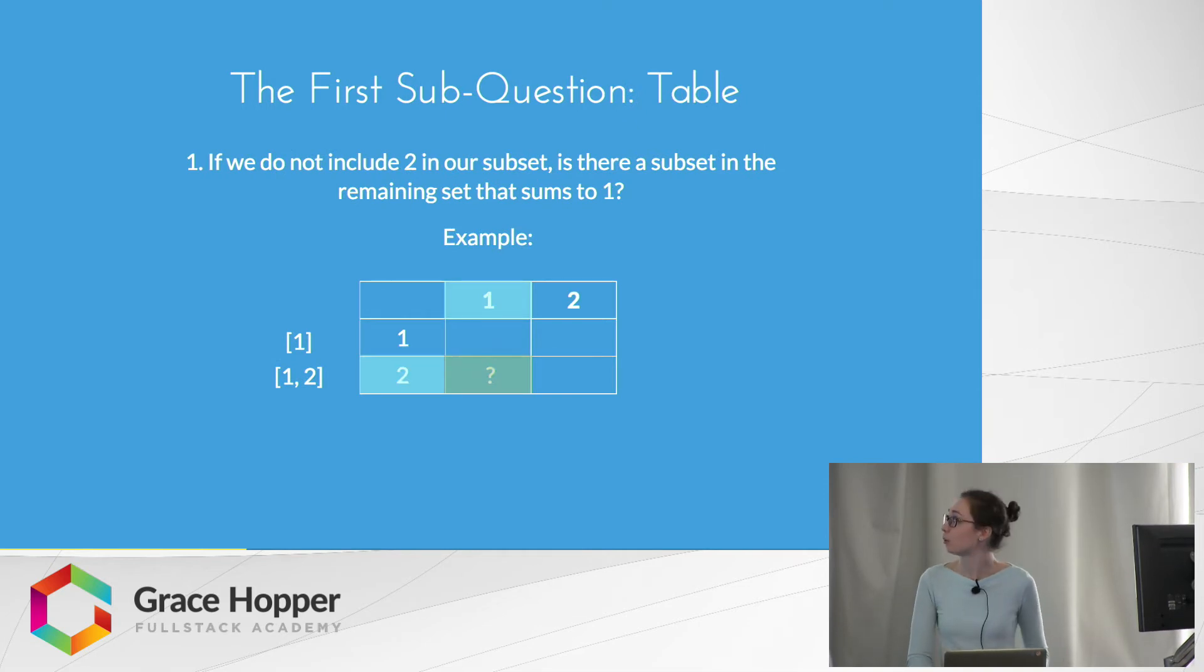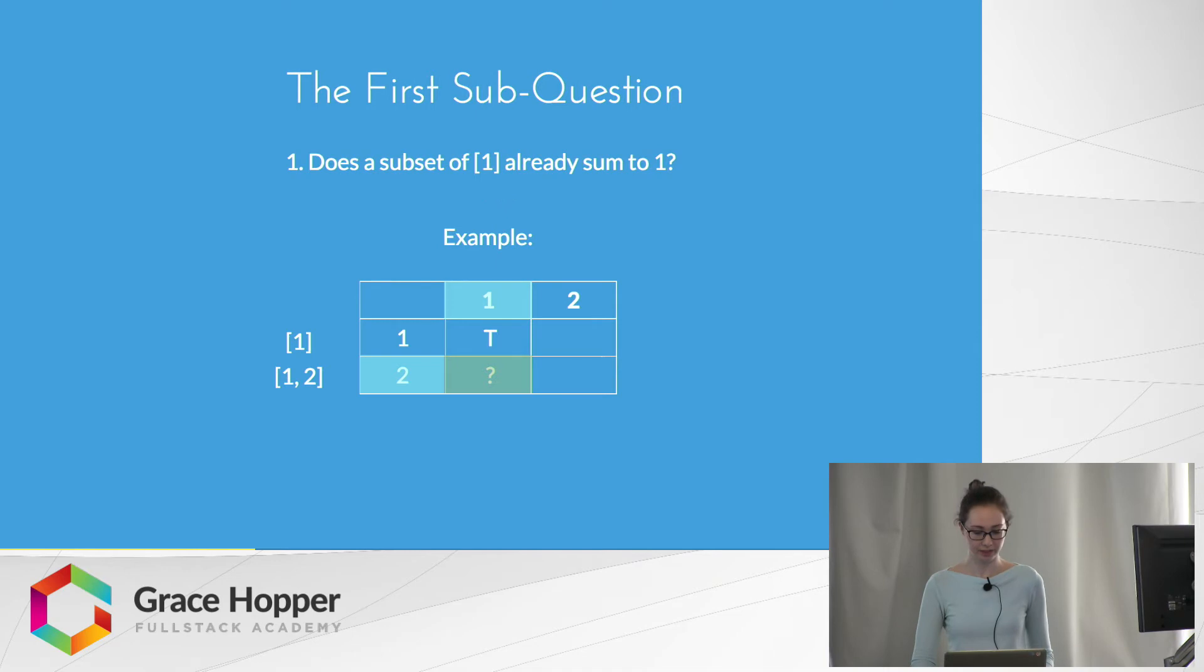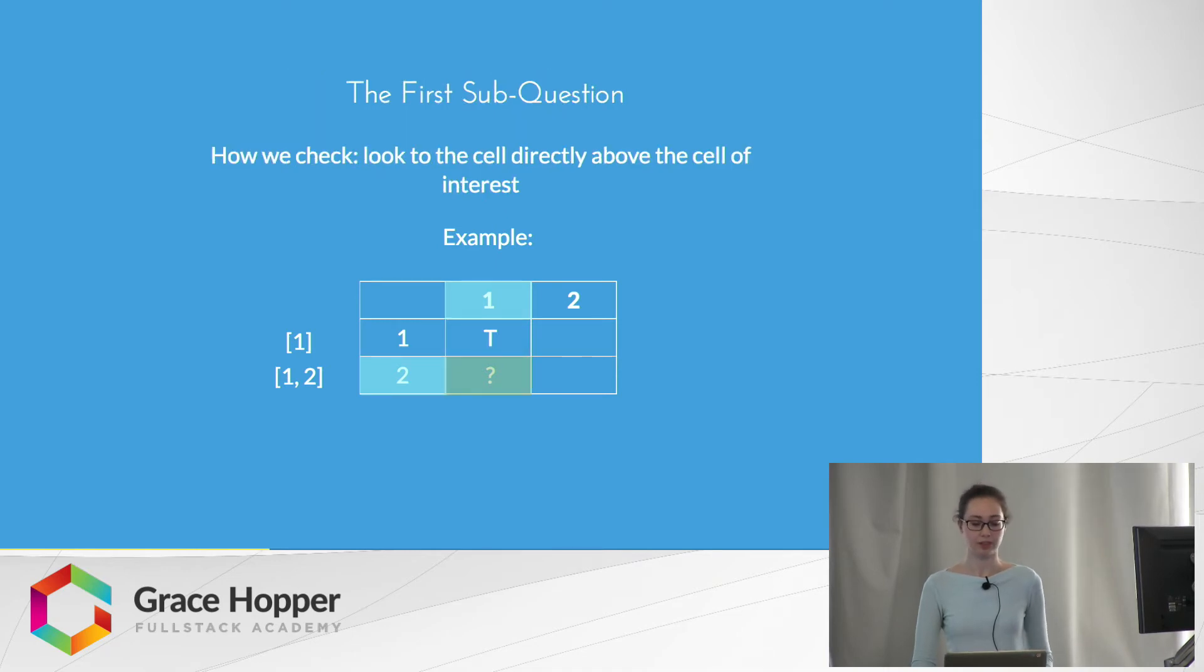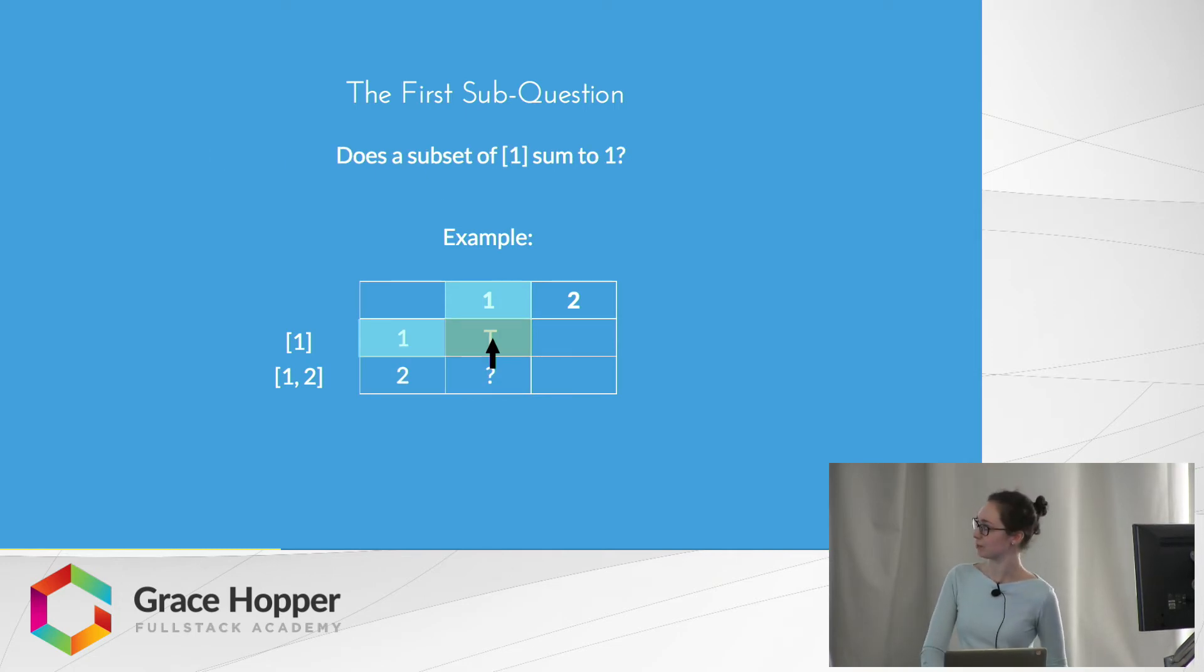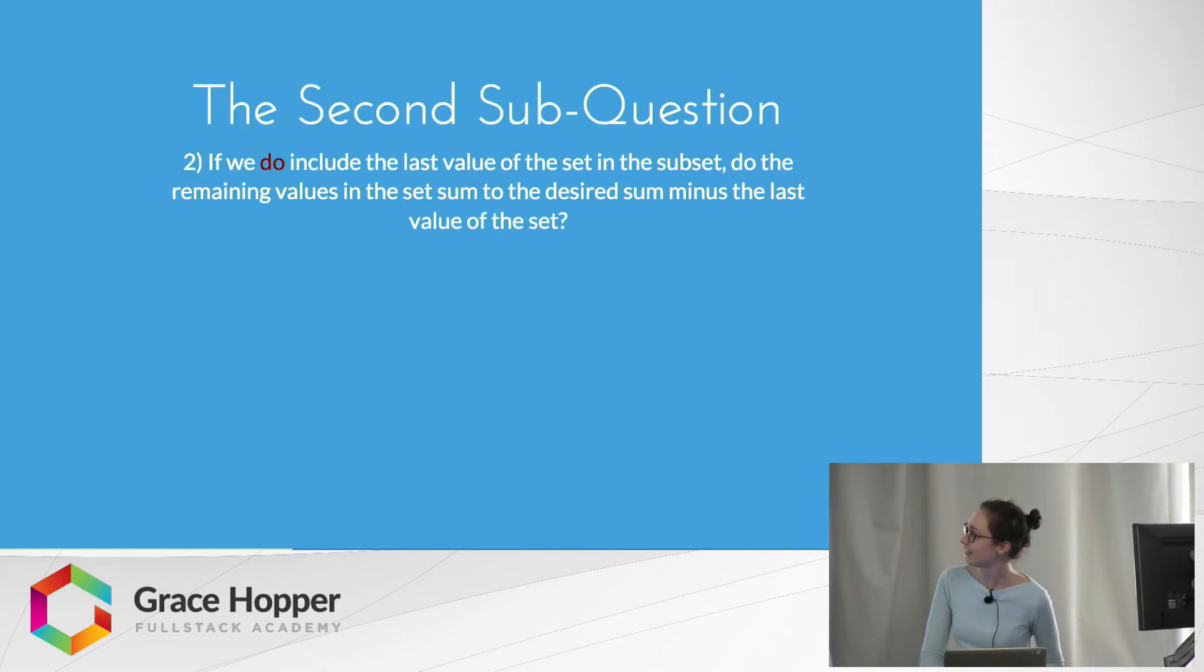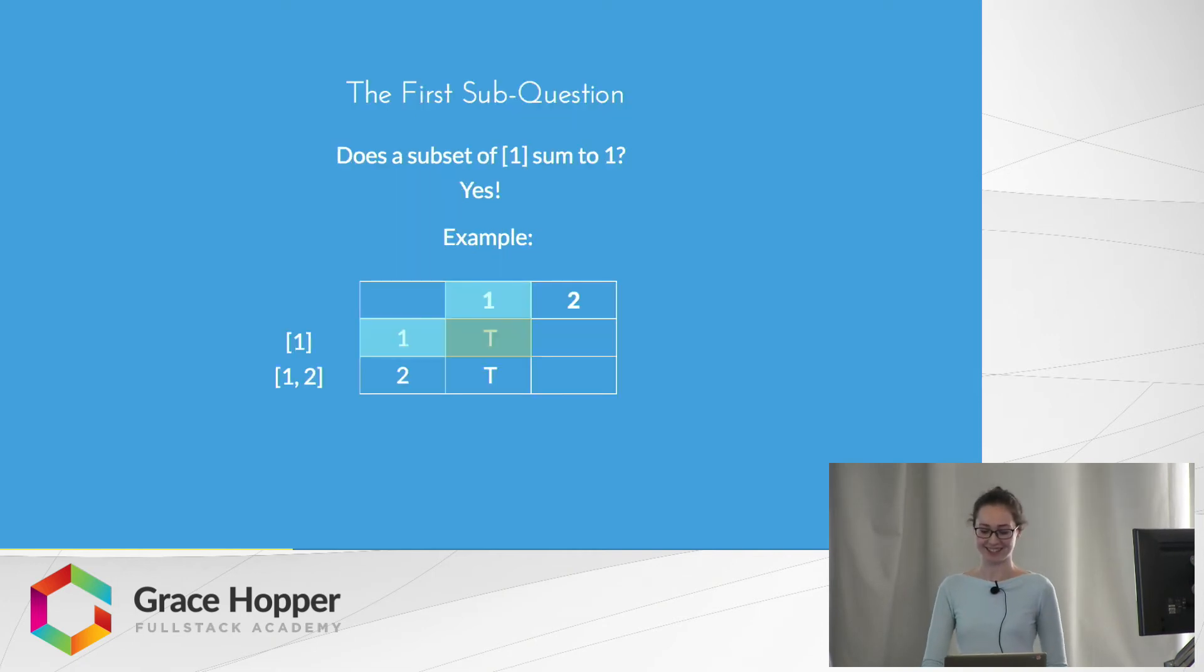This is how we would represent it in a table. We follow the same pattern as before. The way we check whether this first question is true is that we look to the cell directly above our cell of interest. If we move up one cell, we'll see that the question becomes: is there a subset of {1} that sums to 1? And the answer here, as you can see, is true. Therefore, the answer to our original question is also true.